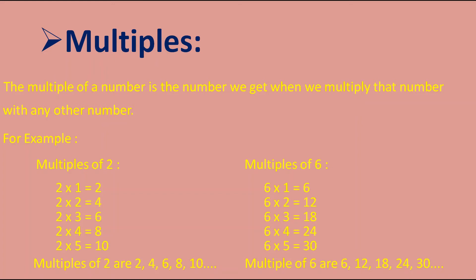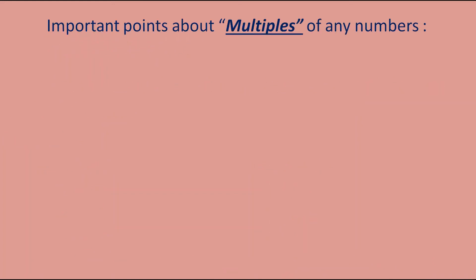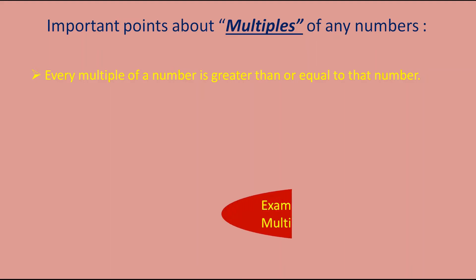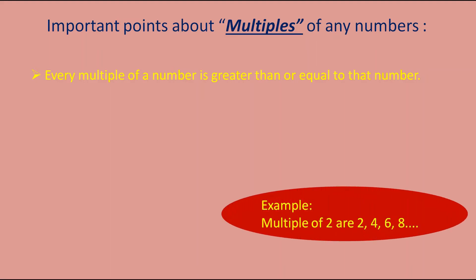Now some important points about multiples. The first point is: every multiple of a number is greater than or equal to that number. For example, the multiples of two are 2, 4, 6, 8. The numbers 4, 6, and 8 are greater than two, and if you find more multiples, all will be greater than two. The first multiple, two, is equal to two. So every multiple of a number is greater than or equal to that number.